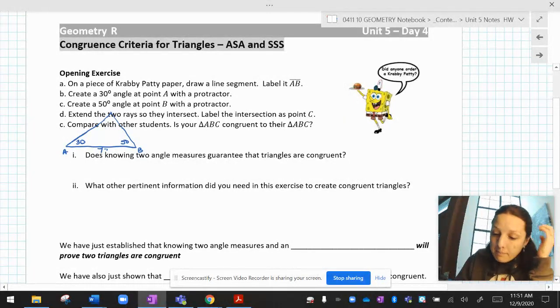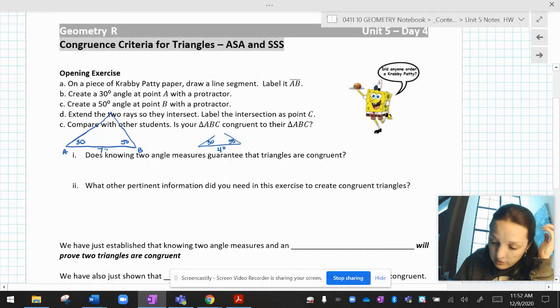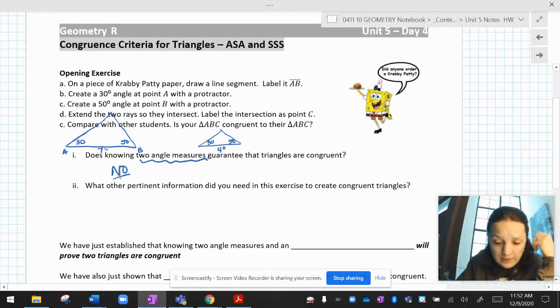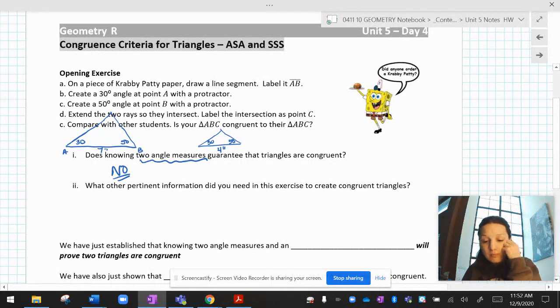Okay, fine. But then if my neighbor just used a four inch line and a 30 degree angle and a 50 degree angle, they would still intersect, but it would be a smaller triangle. Okay, so does knowing two angle measures guarantee that the triangles are congruent? No, I need more than just the angle measures.